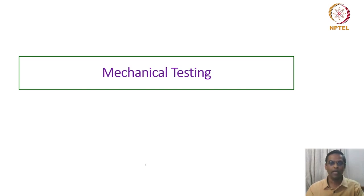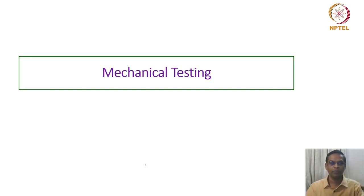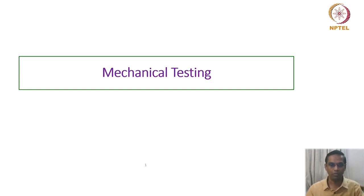We will go through a gamut of testing — tensile, impact, fracture, and more. The most popular among these tests is the simple tensile test, from which people try to derive as much information as possible. We will spend a lot more time on tensile testing, as a wealth of information is available for a variety of materials. But even before the tensile test, there is a much simpler test possible in terms of mechanical behavior: the hardness test.